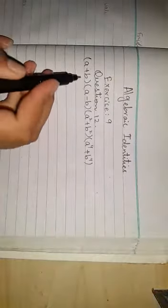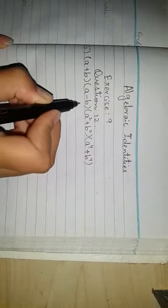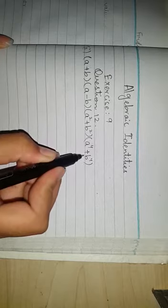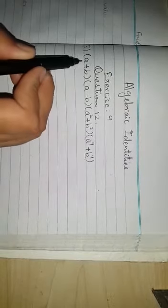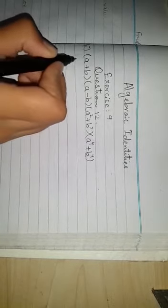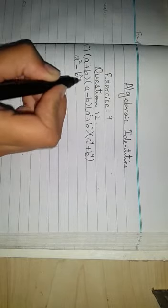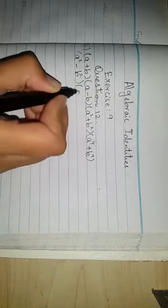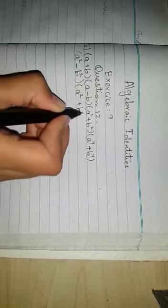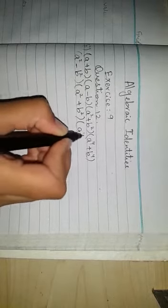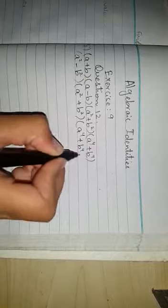Question number 12, part 2: (A+B)(A-B)(A²+B²)(A⁴+B⁴). Now I'm going to start. A square... (A-B) square... A²+B² as it is... A⁴+B⁴.